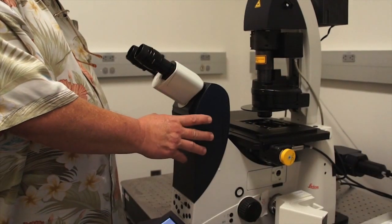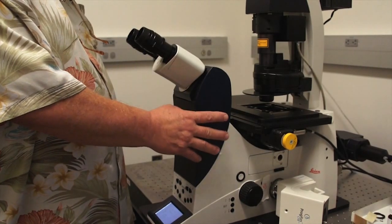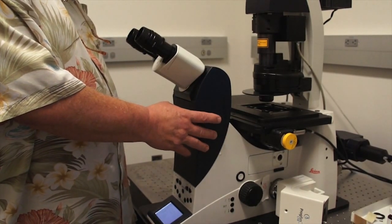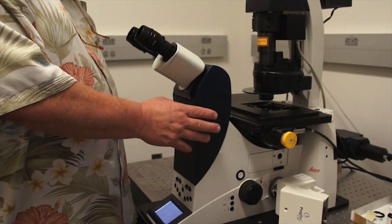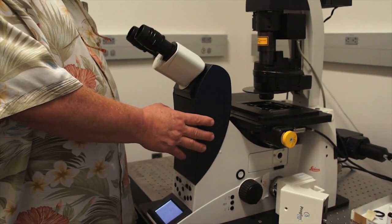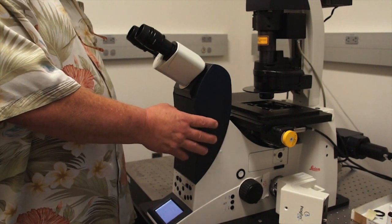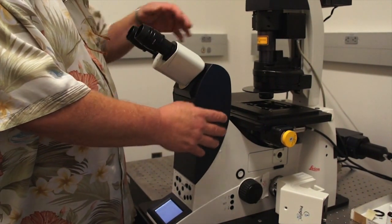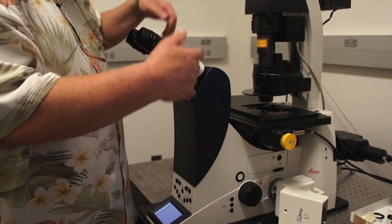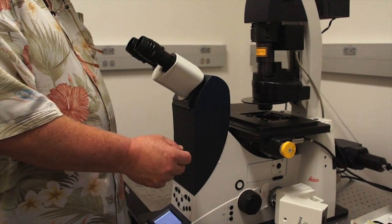The Leica confocal microscope has at its base an inverted microscope. Previously we discussed an upright compound microscope, and so we discussed the illumination path, we discussed the optical path, and here with an inverted microscope everything is reversed. Everything is upside down from the upright microscope that we worked with previously.